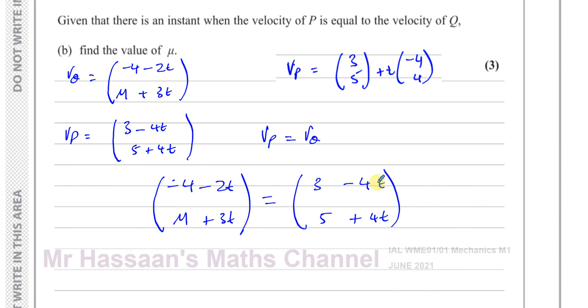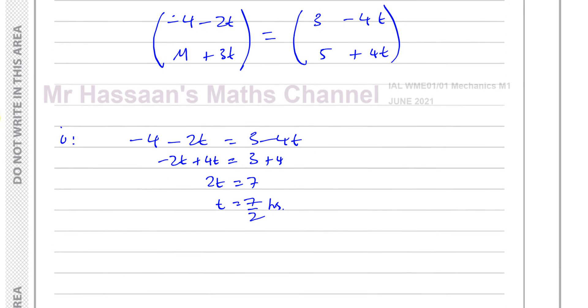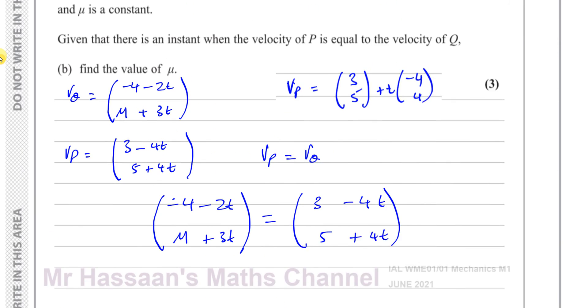We want to find the value of t first for which they're equal, then we'll find mu. I can find t using the i components, because the only unknown is t here. So minus 4 minus 2t equals 3 minus 4t. I can add 4t to both sides. So minus 2t plus 4t equals 3 plus 4. This gives 2t equals 7. So t equals 7 over 2, which is 3.5 hours. When t equals 7 over 2 hours, they are going at the same velocity.